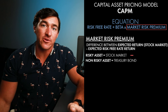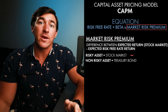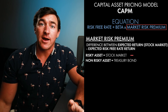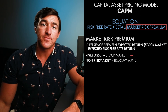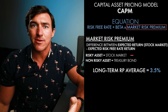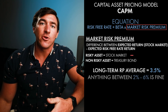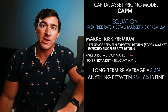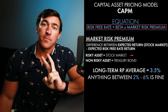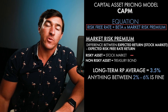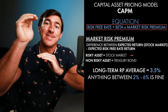We can go online to find the market risk premium — NYU has some resources, and there are tons of others. Just Google 'market risk premium today' and you'll find many lists. The long-term average is right around 3.5%, and anything between 2% and 6% is not uncommon. Now we understand all three aspects of the CAPM equation: the risk-free rate, plus leveraged beta, times the market risk premium — the difference between the expected return of a risky asset and the risk-free asset. Let's run through an example.